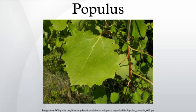Populus section Turanga: Subtropical Poplars. Southwest Asia, East Africa, subtropical to tropical. Includes Populus euphratica (Euphrates Poplar) and Populus ilicifolia (Tana River Poplar). Populus section Abaso: Mexican Poplars. Mexico, subtropical to tropical. Includes Populus guzmanantlensis and Populus mexicana (Mexico Poplar).